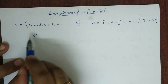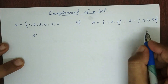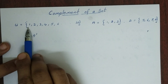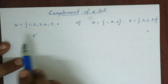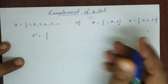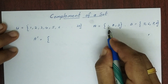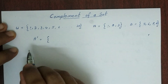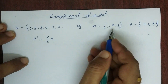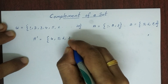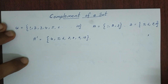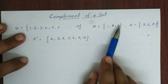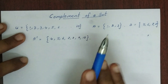A complement is represented with a notation. This is A complement — the complement of a set A.